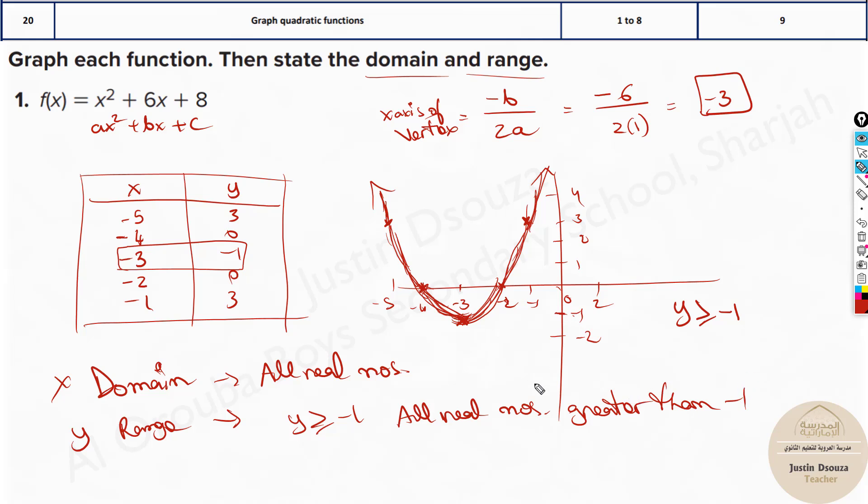You can write it: y is greater than or equal to negative 1, or you can tell all real numbers greater than -1. So this is the answer. So anything is fine, whichever you choose. So this is how we basically graph. It's simple. Make sure you find the vertex, the table, and then the graph.